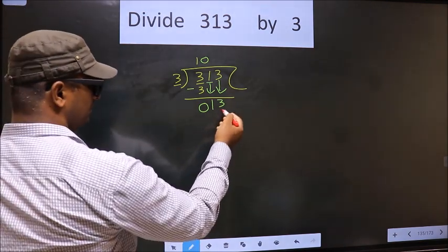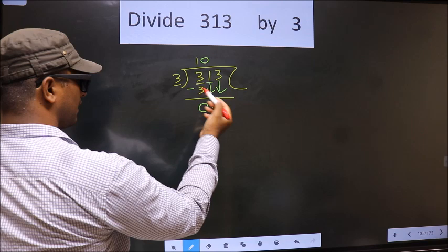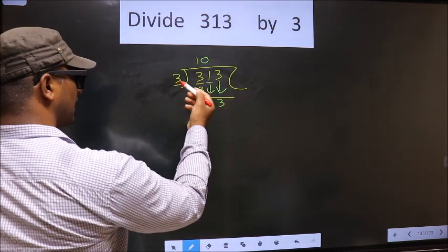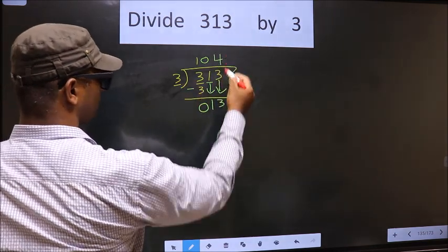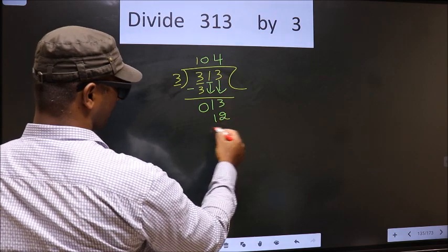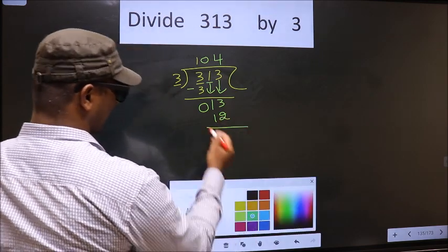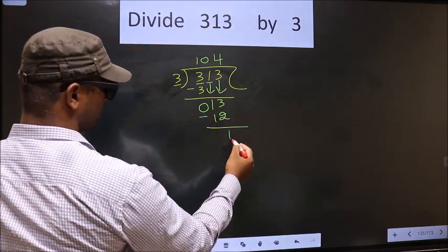Next, here we have 13, here 3. A number close to 13 in the 3 table is 3 fours, 12. Now subtract: 13 minus 12 is 1.